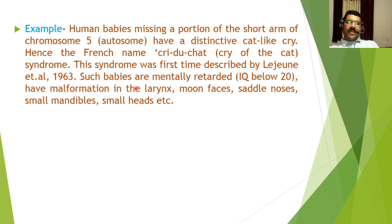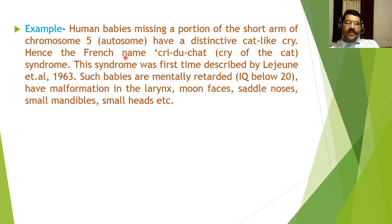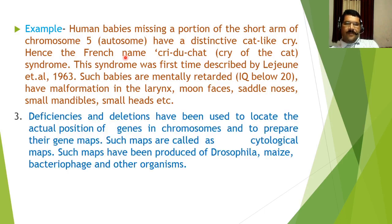Such babies are mentally retarded with an IQ below 20. They have malformation in the larynx, moon faces, saddle noses, small mandibles, and small heads. These are characteristic features of babies having cri du chat syndrome, which is a disorder caused due to deletion of a chromosome part.